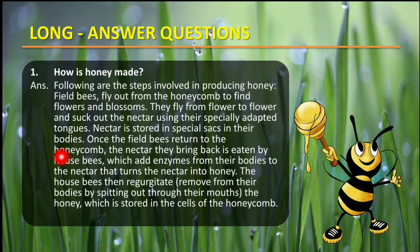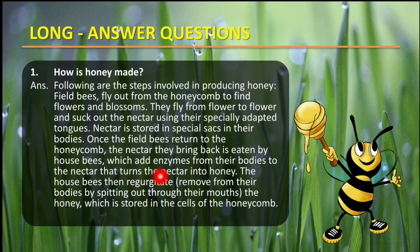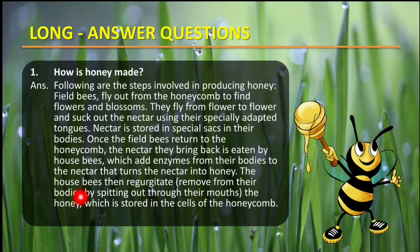Once the field bees return to the honeycomb, the nectar they bring back is eaten by house bees, which add enzymes from their bodies to the nectar that turn the nectar into honey. The house bees then regurgitate — that is, remove from their bodies by spitting out through their mouths — the honey, which is stored in the cells of the honeycomb.